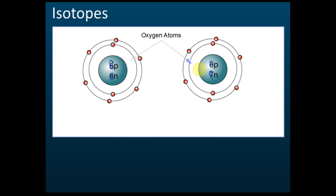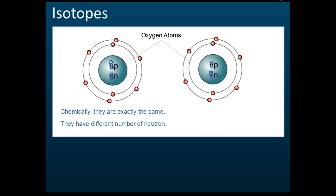They are atoms of the same element — they have the same protons, so chemically they are totally the same. But they have different numbers of neutrons, and we call this isotopes. This one has eight neutrons, this one has nine neutrons.